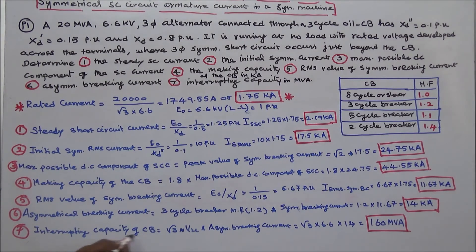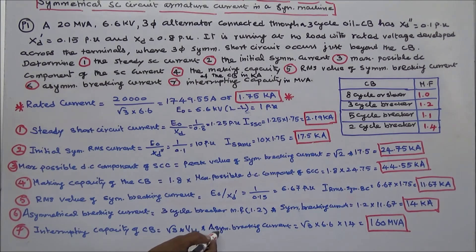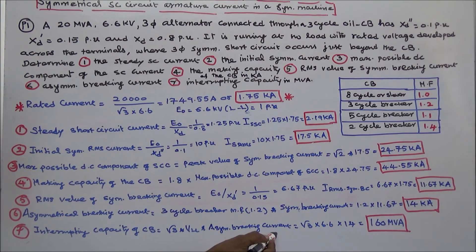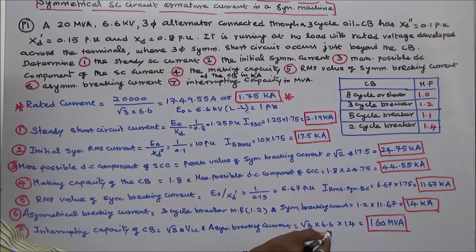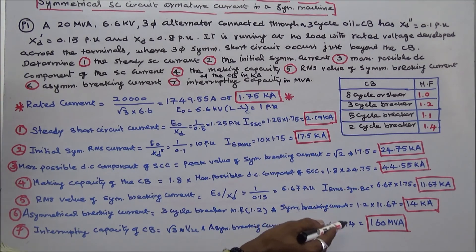Last is the interrupting capacity of the circuit breaker. That equals root 3 into line-to-line voltage into asymmetrical breaking current. Asymmetrical breaking current is 14 kA, root 3 into 6.6 KV into 14 gives the interrupting capacity of the circuit breaker as 160 MVA. This way we work out this problem. Thanks for listening.